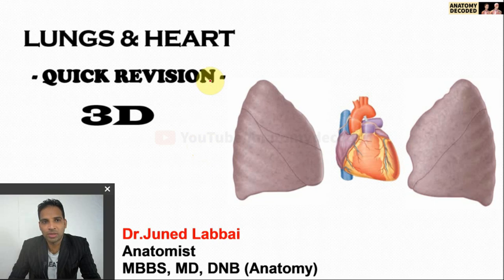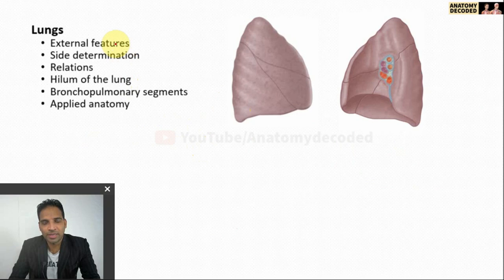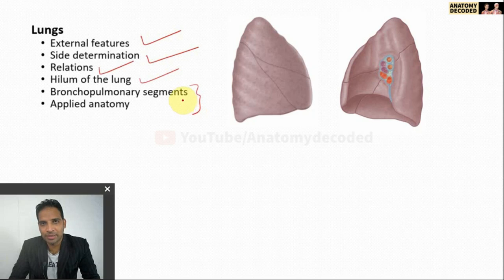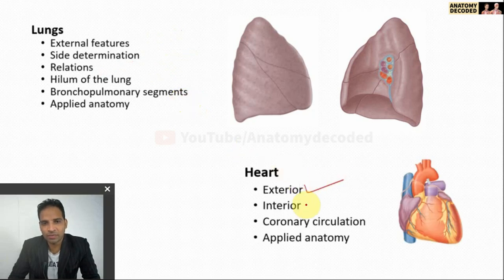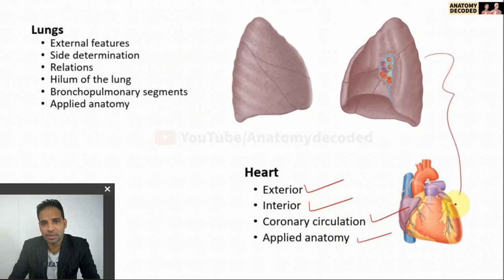Hello everyone. In this session we will be learning about the lungs and the heart. I will also be showing 3D models of lungs and the heart, so stay tuned till the end. For lungs, I will cover external features, side determination, various relations, structures at the hilum, and bronchopulmonary segments with applied anatomy. For the heart, I will cover the exterior, interior, coronary circulation, and applied anatomy.